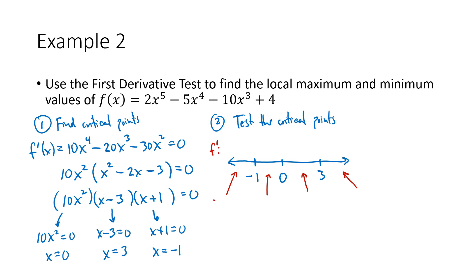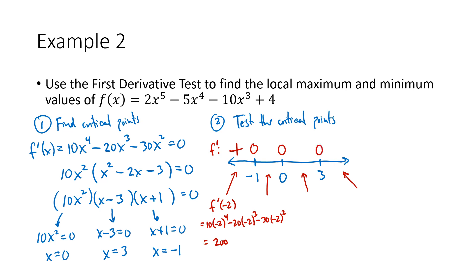Less than negative one — let's choose negative two. So f prime of negative two is 10 times (−2)⁴ minus 2 times (−2)³ minus 30 times (−2)². Plugging that into the calculator I get positive 200 — all that matters is that it's positive, so I put a plus sign. I know the derivative is zero at each of the three critical points; the question is what's happening in between.